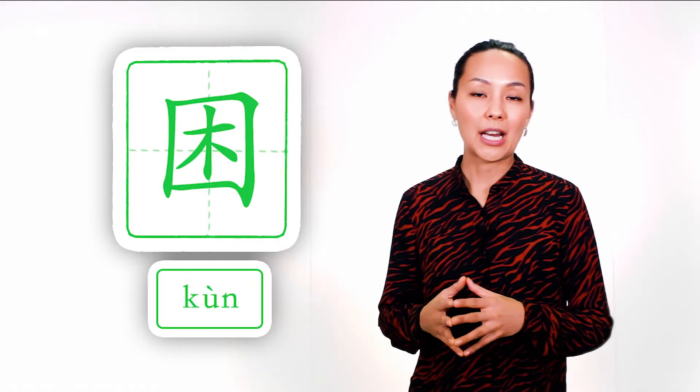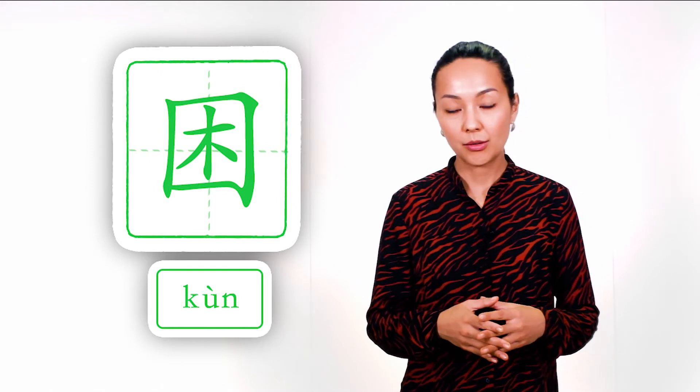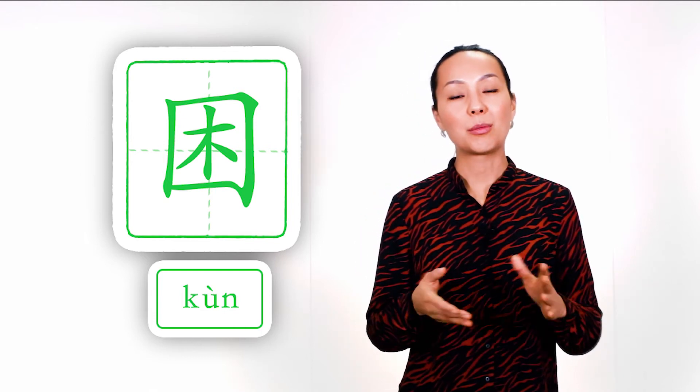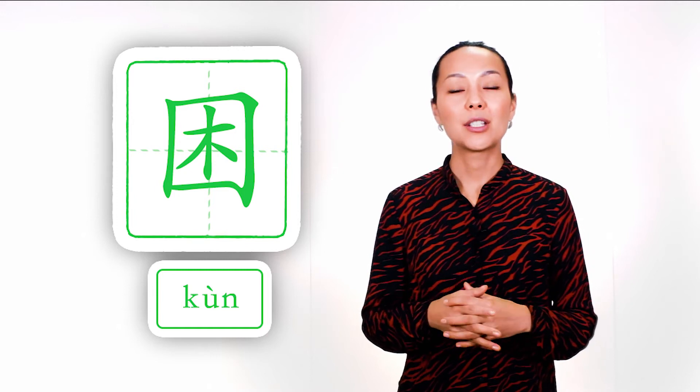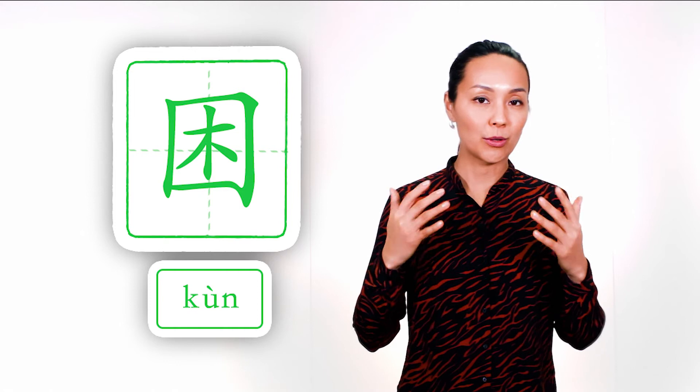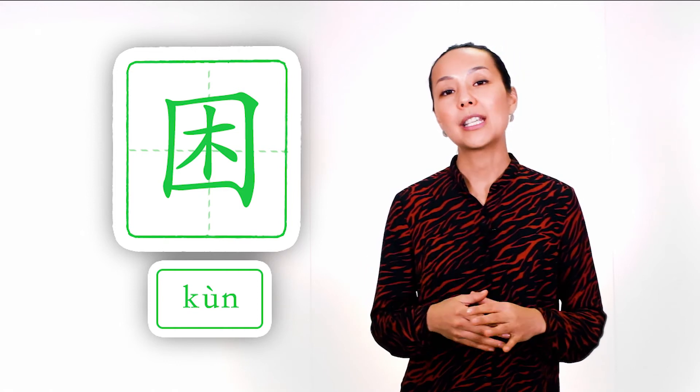The next example is the character to be tired, kùn. When we are tired we go to our borderlines, for example some kind of garden. And there we have a tree. And we sit down or lie down near this tree. That's why this character has tree inside.